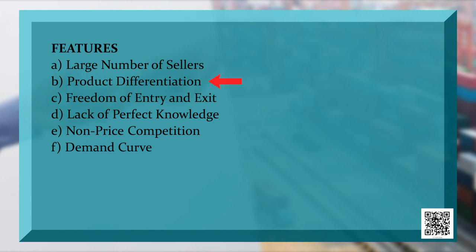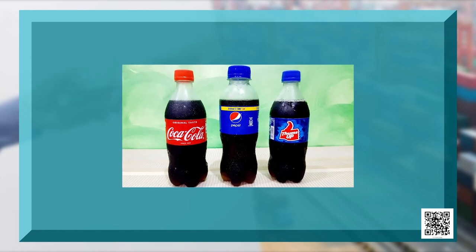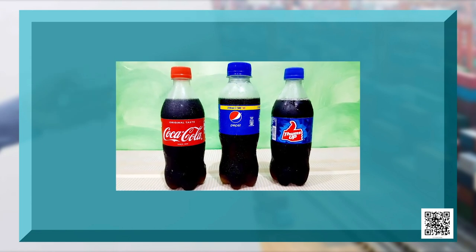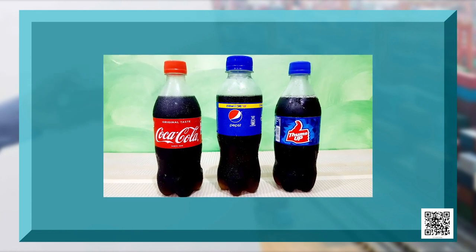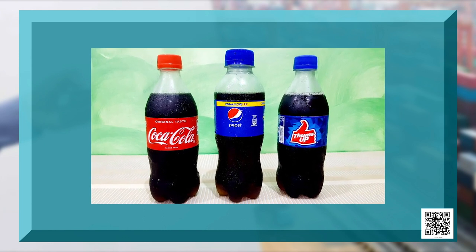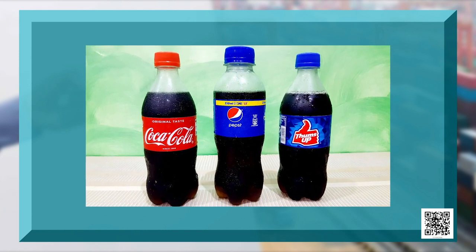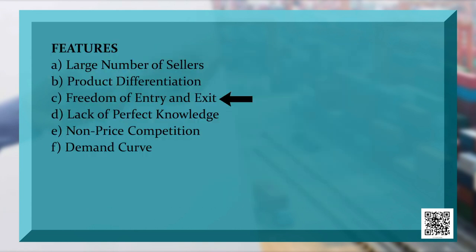The second feature is product differentiation. It means products are not fully identical but they differ in their features. For example, Coke, Pepsi, and Thumbs Up — the products are somehow identical with each other but the taste is slightly different.